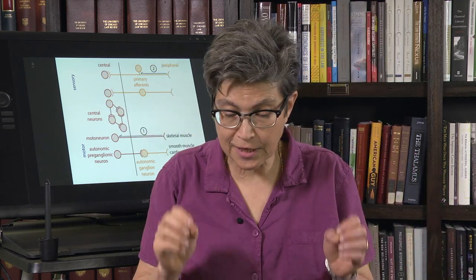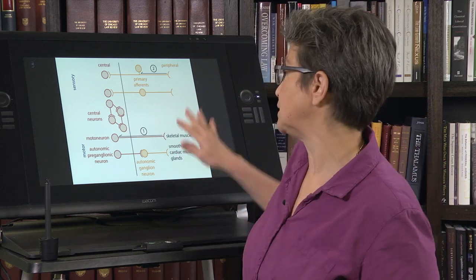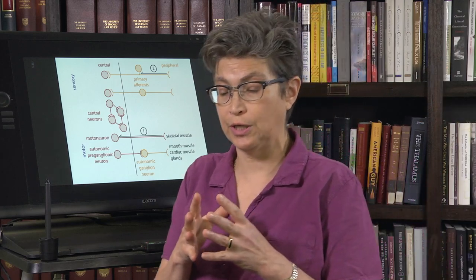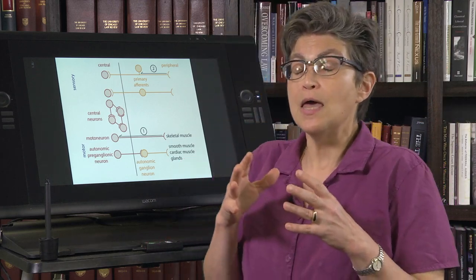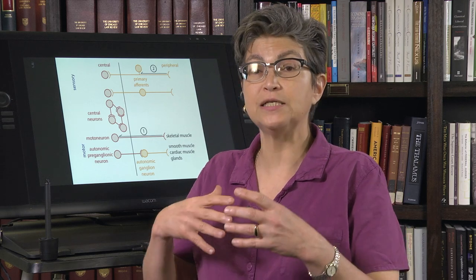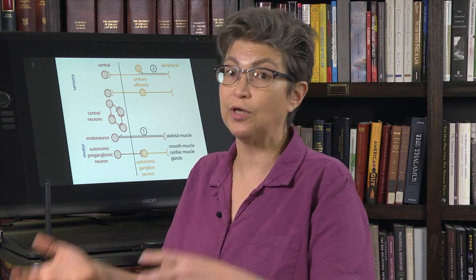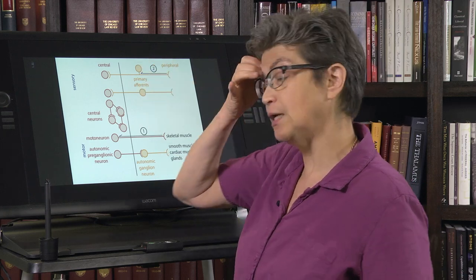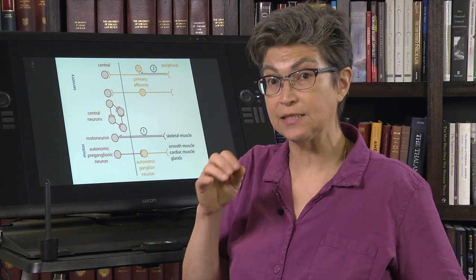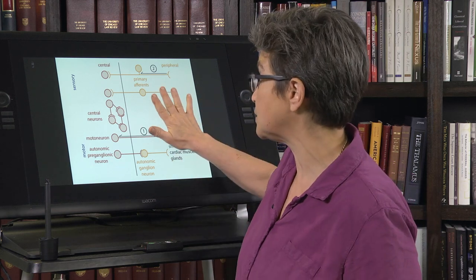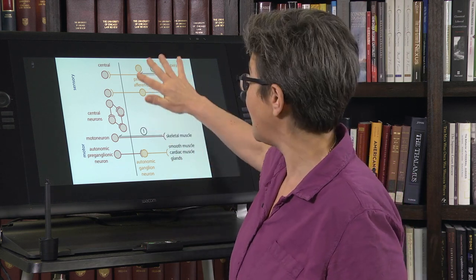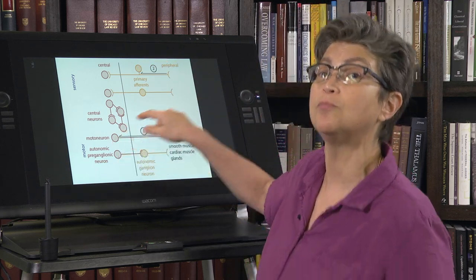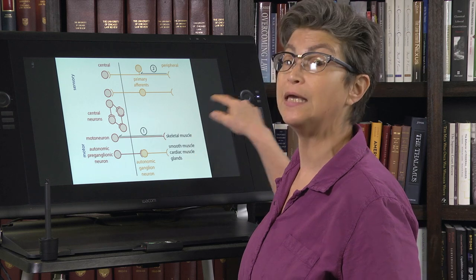We can think about why it's important to consider these peripheral and central neurons, because their developmental origin gives them a molecular vulnerability that is specific to the periphery or to the central nervous system. We're going to see a disease that affects peripheral nervous system development, and that is going to affect these primary afferents, but it's not going to affect these motor neurons, even though the motor neurons send an axon into the periphery.